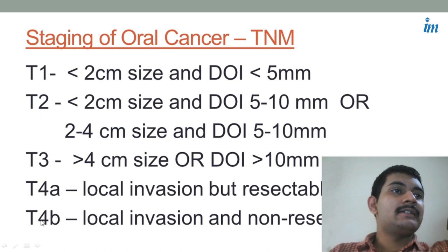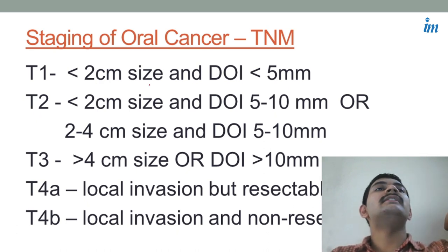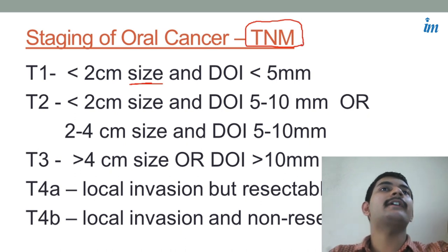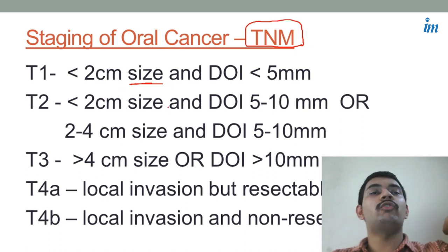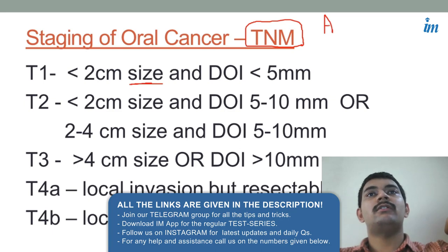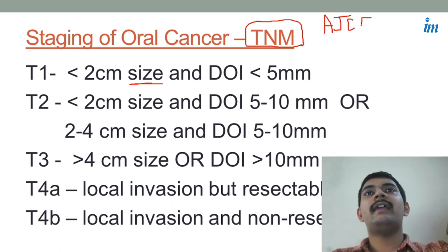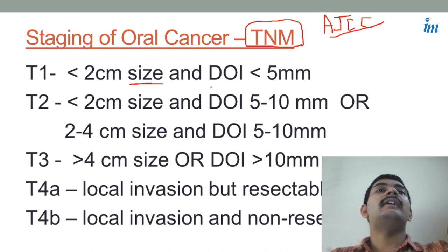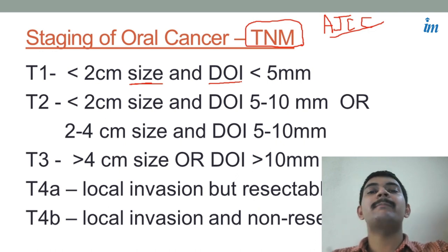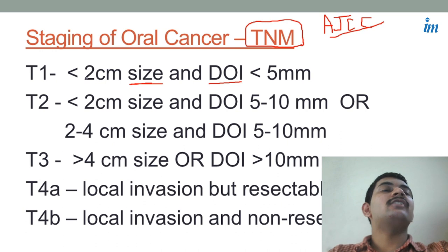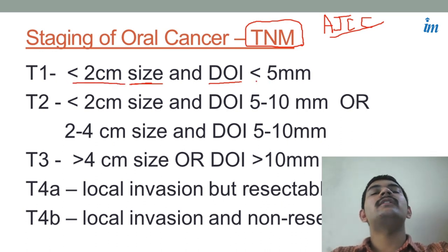How do we stage the disease? We are doing TNM staging — T for tumor, N for node, and M for metastasis. Earlier we used to have only the size of the tumor considered, but as per the AJCC 8th edition, they have taken into consideration DOI — depth of invasion — considering how deep the lesion is. Stage one is going to be less than two centimeters size and depth of invasion less than five mm. You will get the depth of invasion with the help of CT scan.